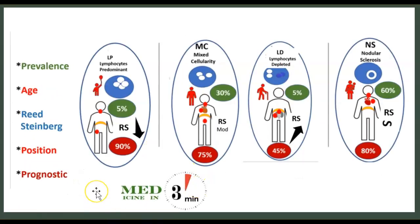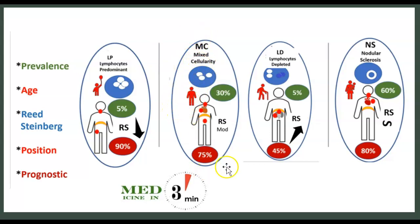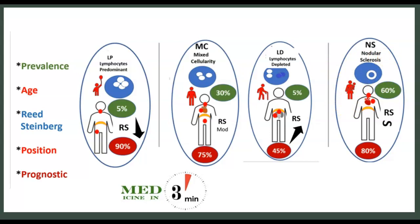Going deeper into prognosis: you have a 90% prognostic rate if lymphocytes are predominant, the patient is young, and the position is still in the hip or neck area. A 75% rate if there is mixed cellularity. A 45% rate if lymphocytes are depleted. And an 80% rate if there is nodular sclerosis — another factor being if the patient is a young, sexually active woman.